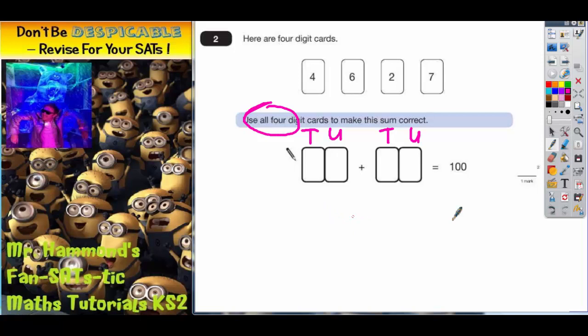But a better way of thinking about this is that in the units column of the answer, it's 0. Now how are we going to make that 0? Well, we'd either have to have 0 add 0 making 0, but we don't have any 0s up here, so it can't be that.